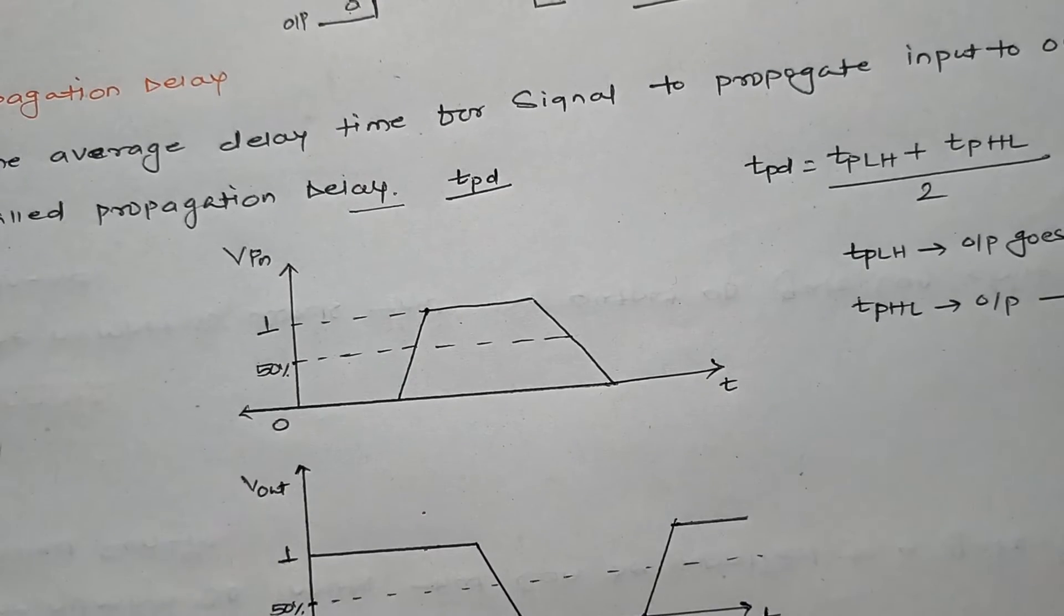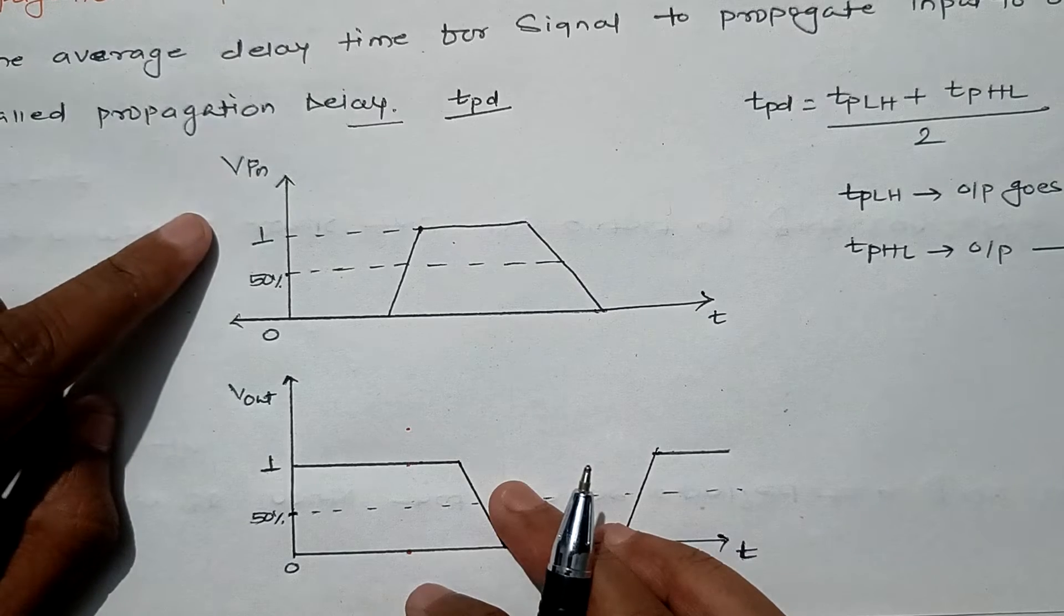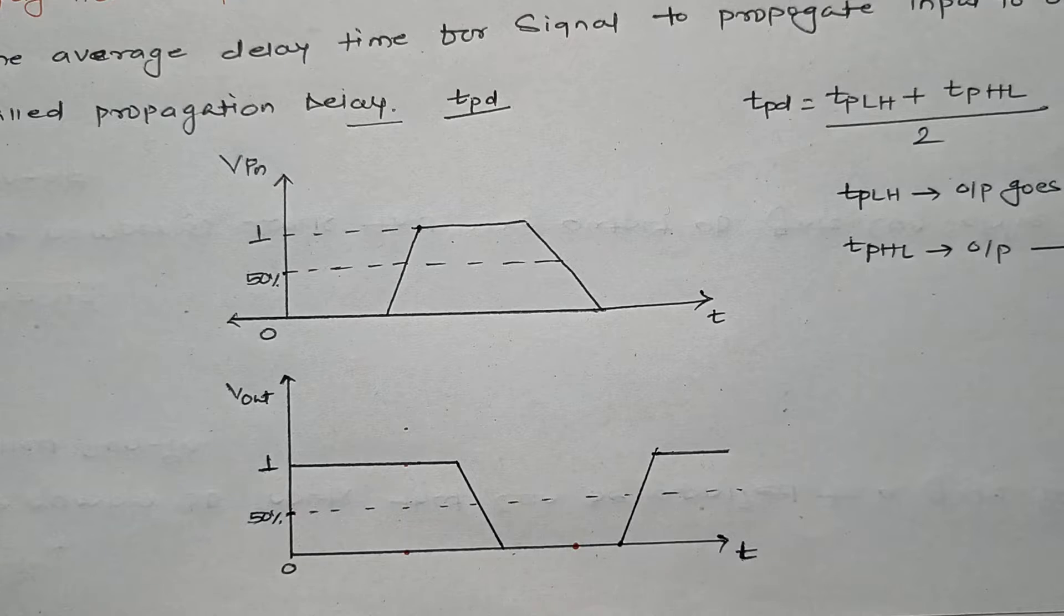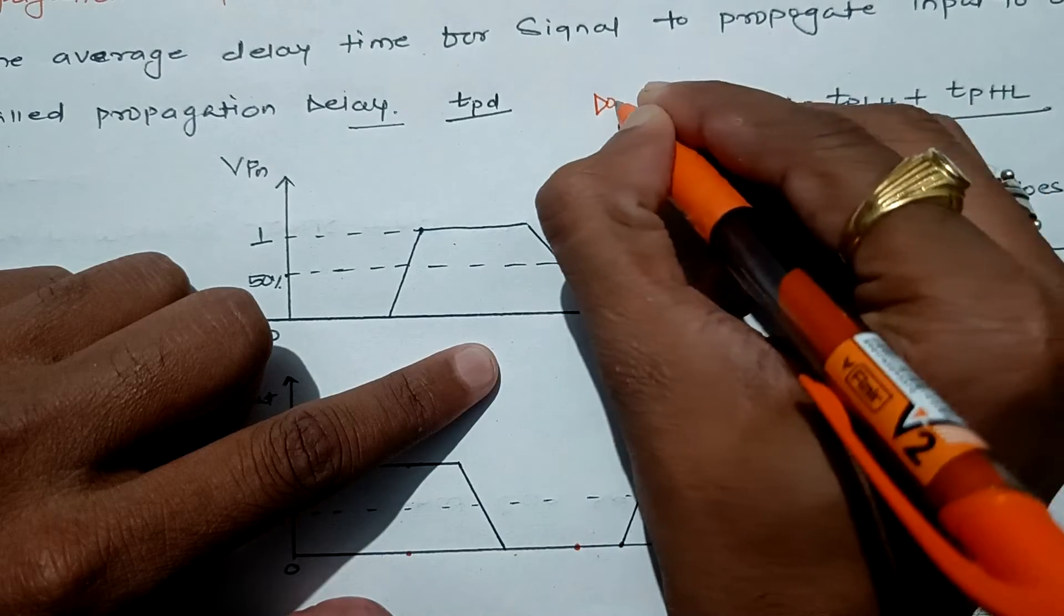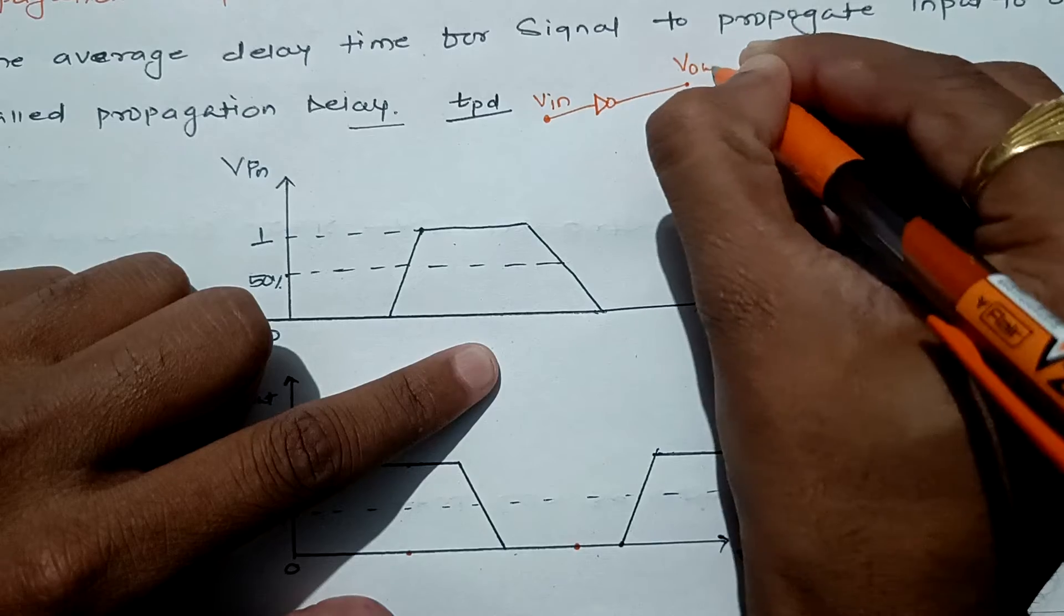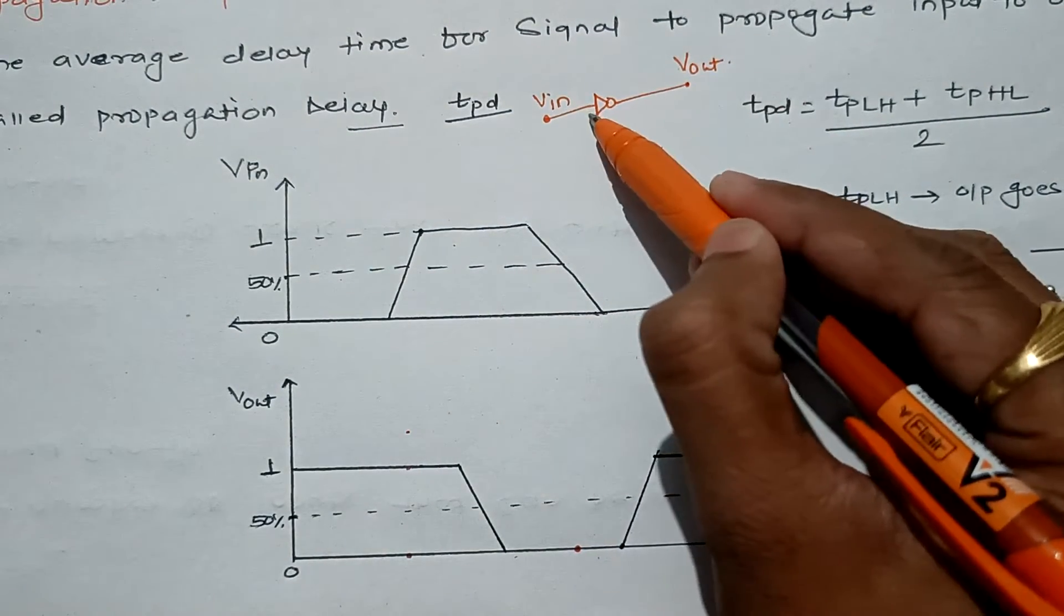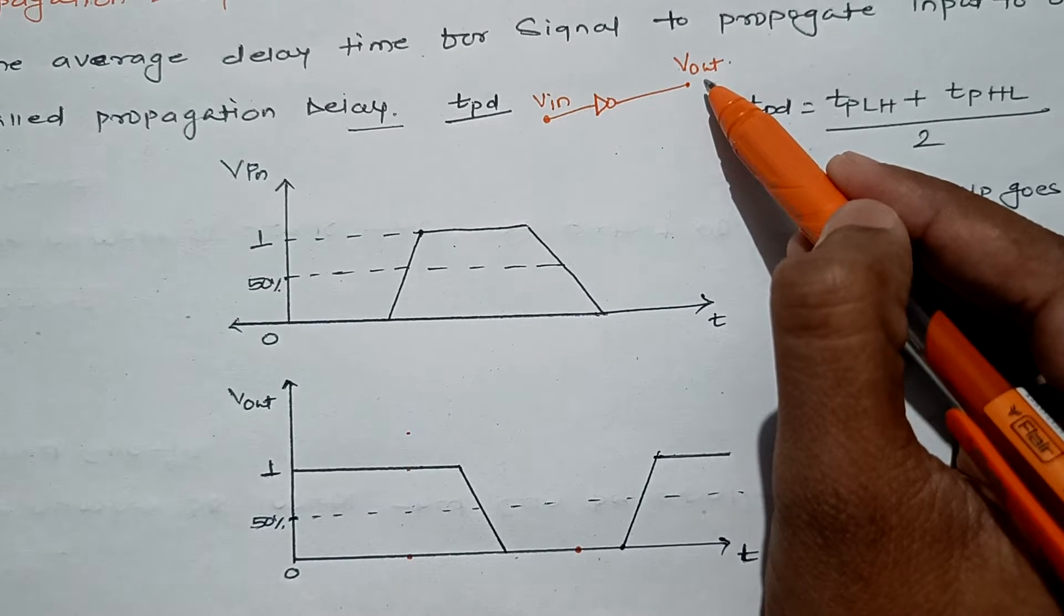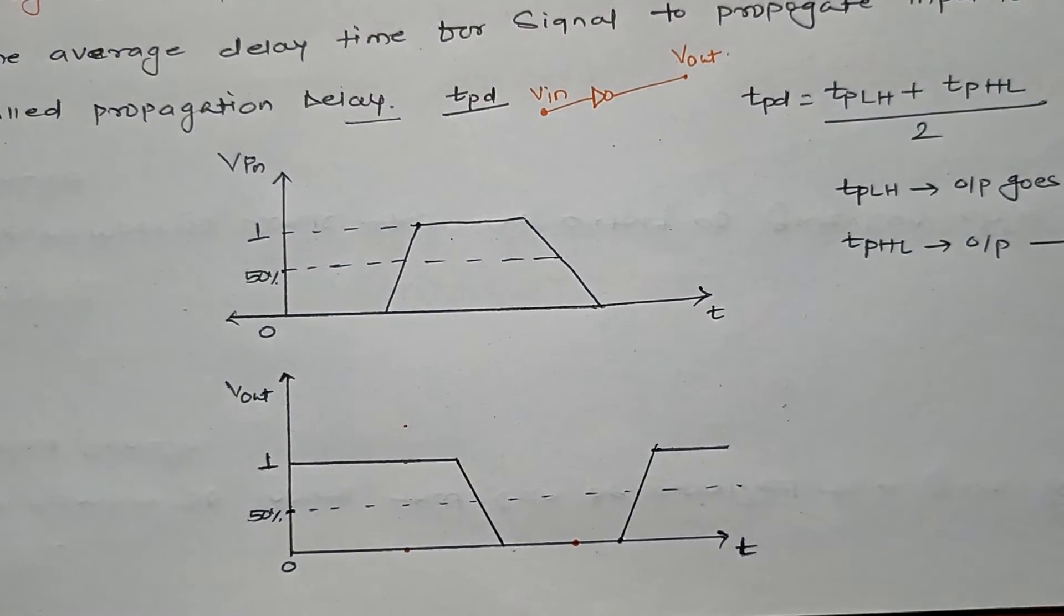To explain propagation delay, we have taken a schematic. This is our input signal and this is our output signal. Let's suppose we are using an inverter or NOT gate. Whenever I am applying the input at this side, I will be getting inverted output but it takes certain amount of time and that delay is propagation delay.